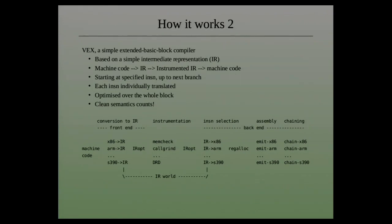We pass the result block through an intermediate representation optimizer which usually removes a huge amount of redundant gets and puts. So we have the machine code going through target-dependent front ends, then it goes to the tool which instruments it, then it's cleaned up again. Then it goes to the back end where we select instructions for the particular target, there's a target-dependent register allocator, and then you can forward stuff to assembly and linking into the running image.